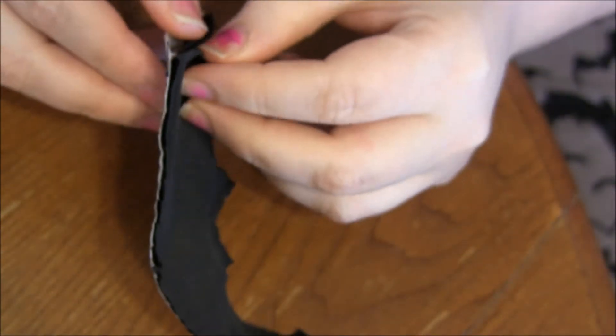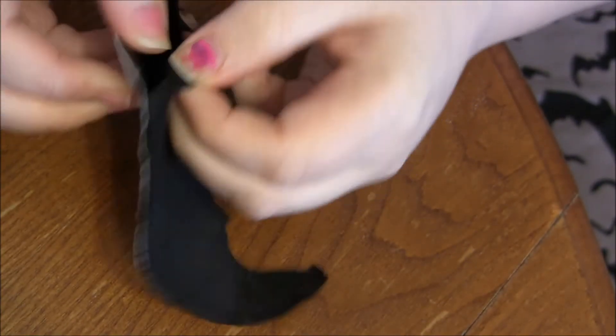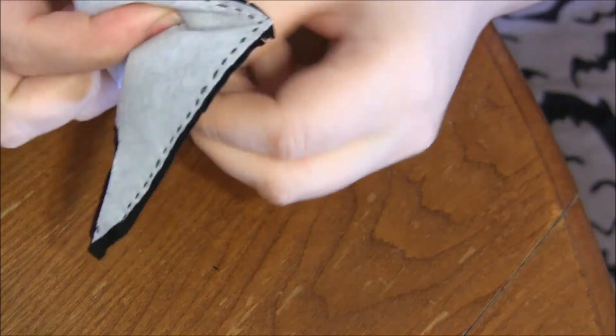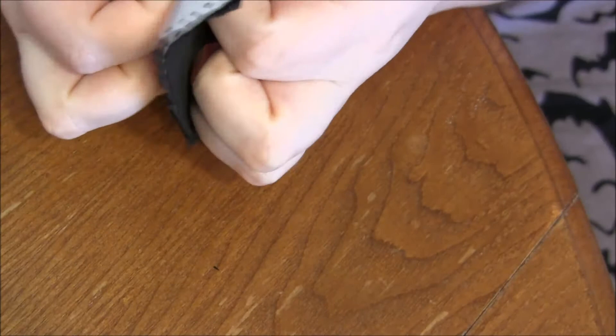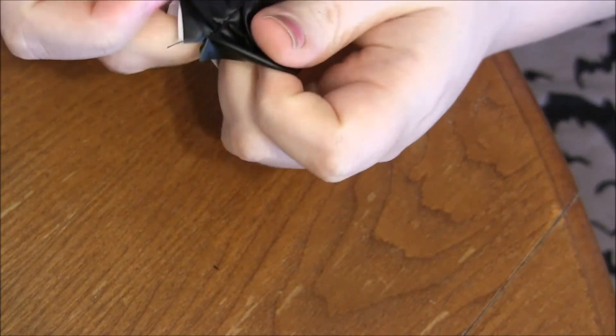Now you're going to take the two sides that are sewn together, open them, and turn this inside out so that it's right side out. You're going to want to poke your finger in there.